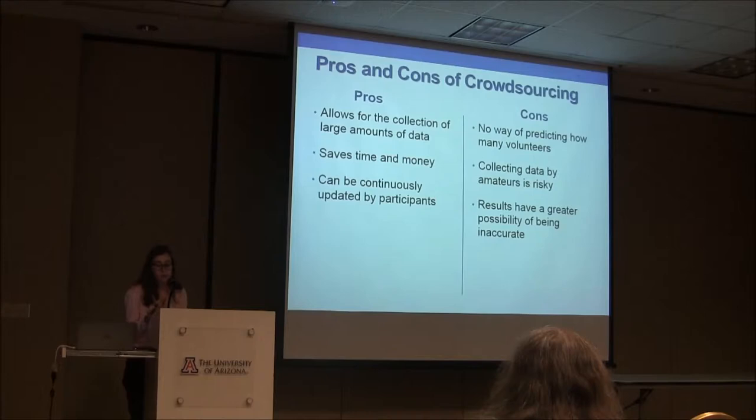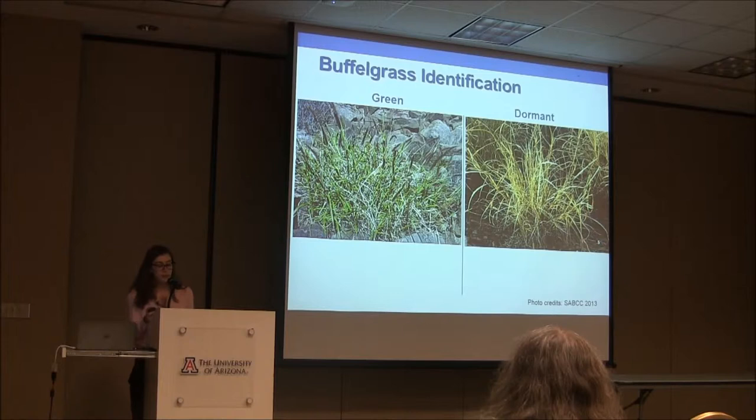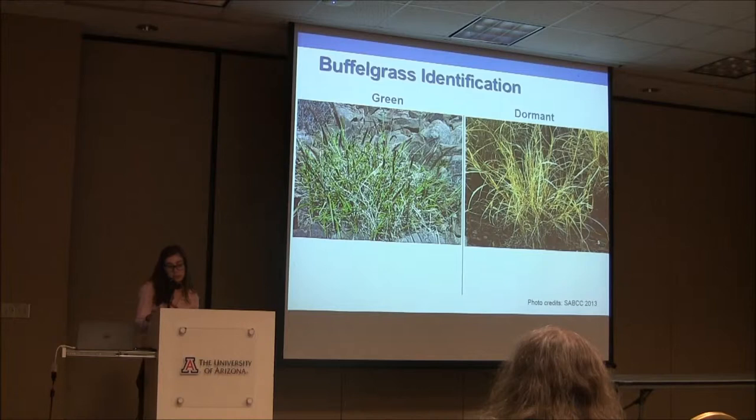There is also the possibility that the results will be inaccurate for the survey. In this particular project there is a good probability that some buffelgrass will be misidentified. Buffelgrass has two life stages: a green stage and a dormant stage. Both plants pictured are alive and well. Since buffelgrass can look like two different plants, it makes identification that much more risky.